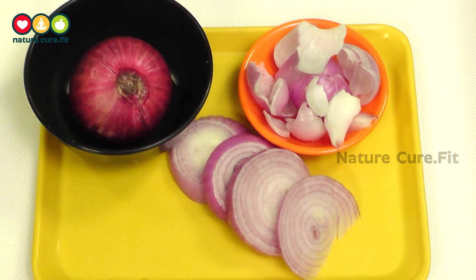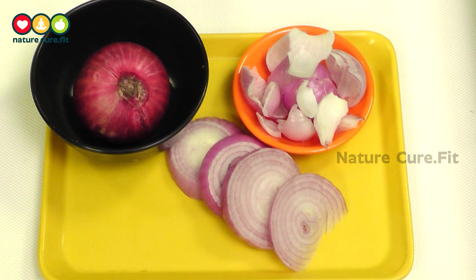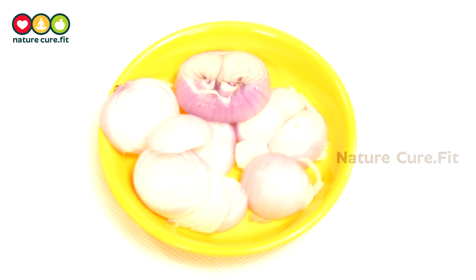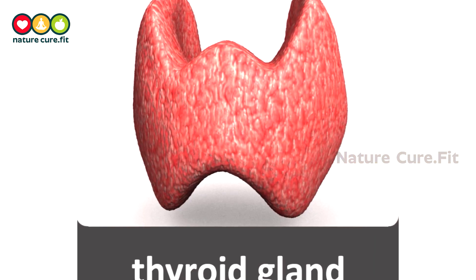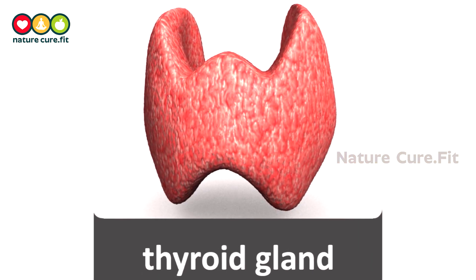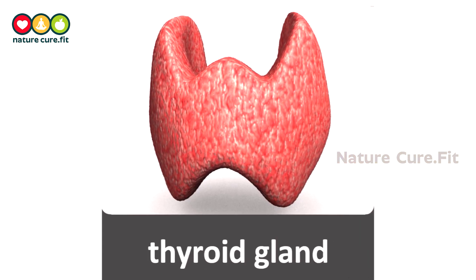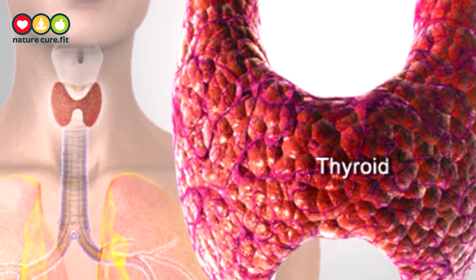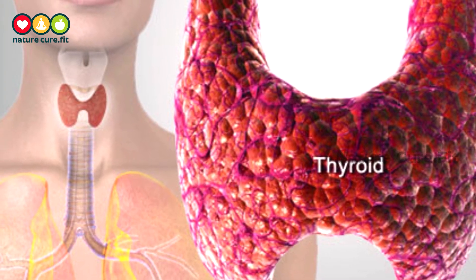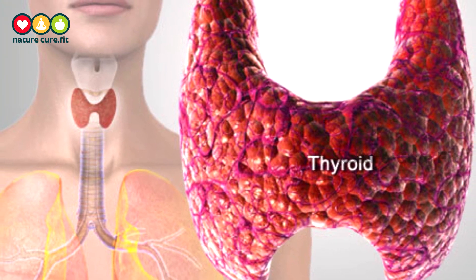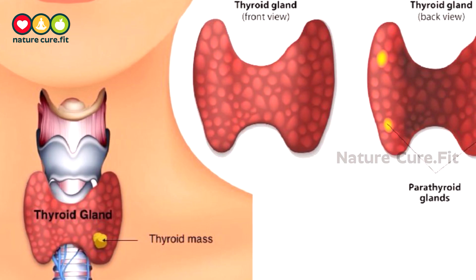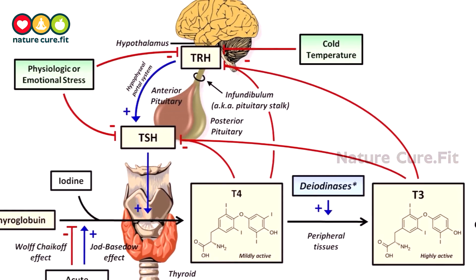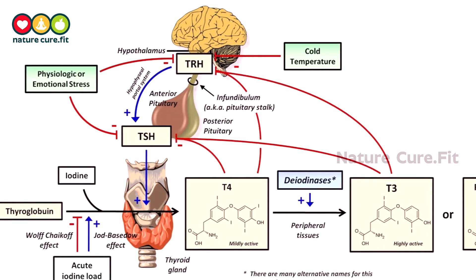He slept with a red onion around his neck, and when he woke up he witnessed a miracle. Thyroid disorders are conditions that affect the thyroid gland, a butterfly-shaped gland in the front of the neck. The thyroid has important roles to regulate numerous metabolic processes throughout the body. Different types of thyroid disorders affect either its structure or function.